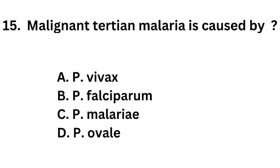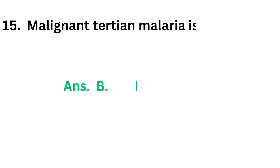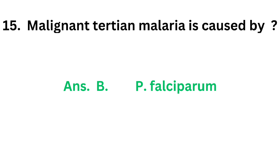Question number 15. Malignant tertian malaria is caused by: Option A: Plasmodium vivax. Option B: Plasmodium falciparum. Option C: Plasmodium malaria. Option D: Plasmodium ovale. The correct answer is option B, Plasmodium falciparum. Malignant tertian malaria is caused by Plasmodium falciparum.